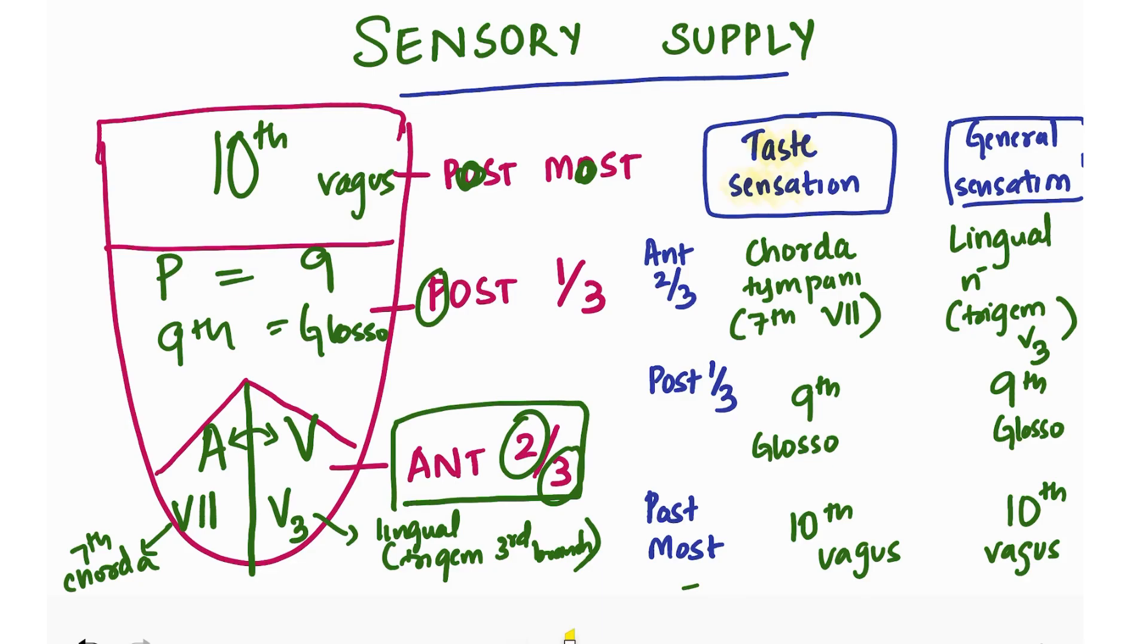Let's do a summary. Taste sensation and general sensation for anterior two-third: chorda tympani, branch of seventh facial nerve, and lingual nerve, branch of trigeminal. We take A from anterior, invert it, and write seventh nerve and V3. Posterior one-third: invert the P to get nine, glossopharyngeal nerve. Posterior most has two O's, ten has a zero - tenth is vagus nerve.